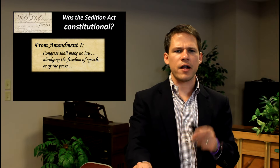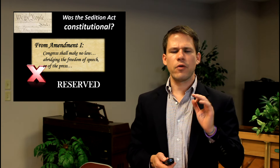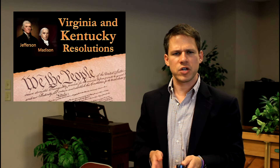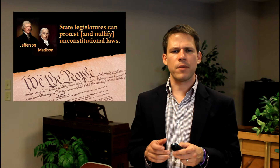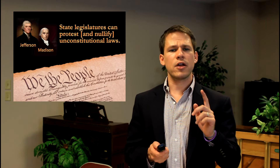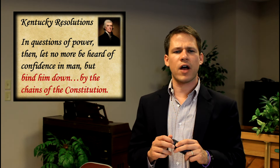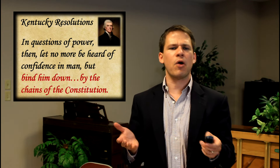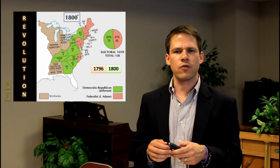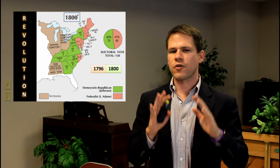The Sedition Act was unconstitutional, so Madison and Jefferson wrote the Virginia and Kentucky Resolutions — protest resolutions aimed at the federal government. They argued state legislatures could protest, and Jefferson went so far as to say states could nullify unconstitutional laws. He wrote in the Kentucky Resolutions: 'In questions of power, let no more be heard of confidence in man, but bind him down with the chains of the Constitution.' However, the movement died down as Jefferson chose to get elected instead — the Revolution of 1800 — after which nullification and states' rights went to sleep to fight another day.